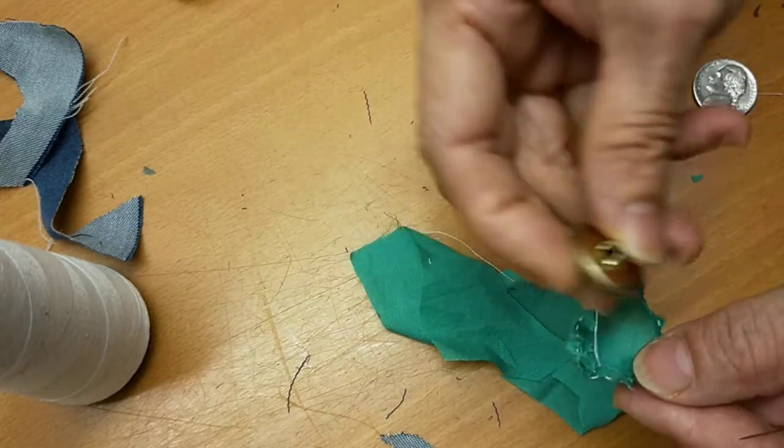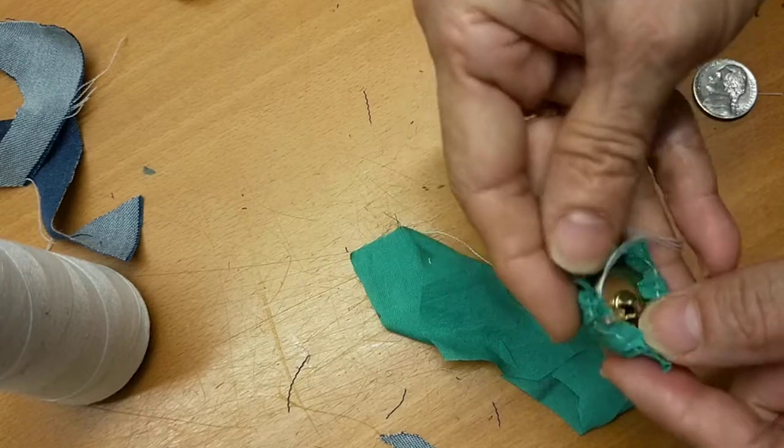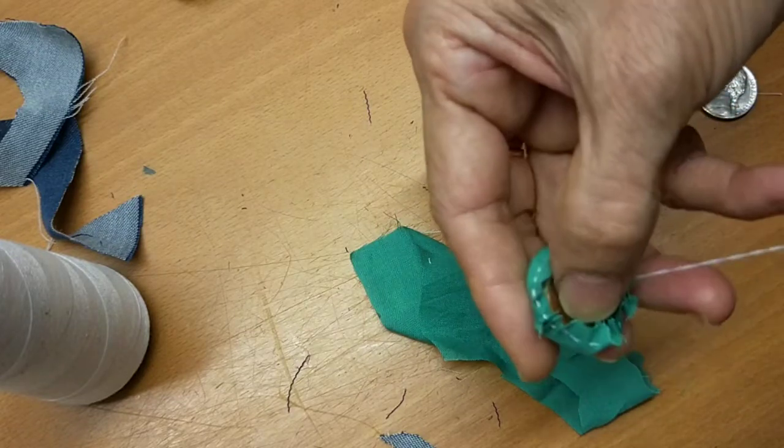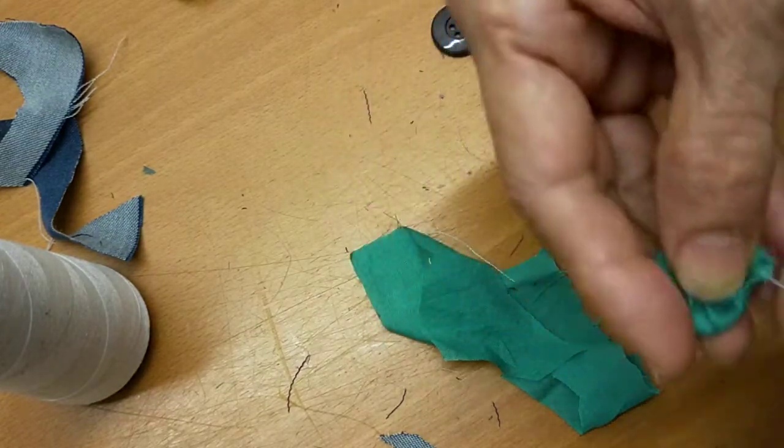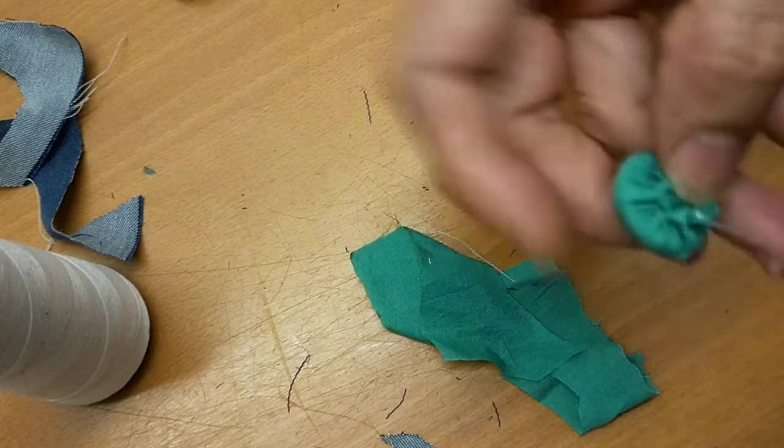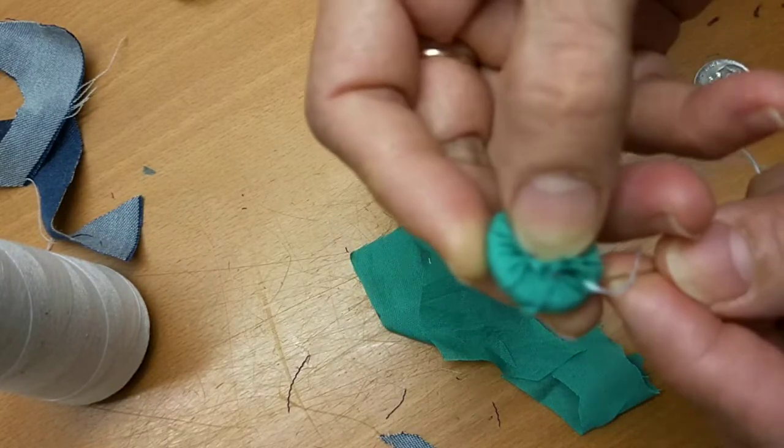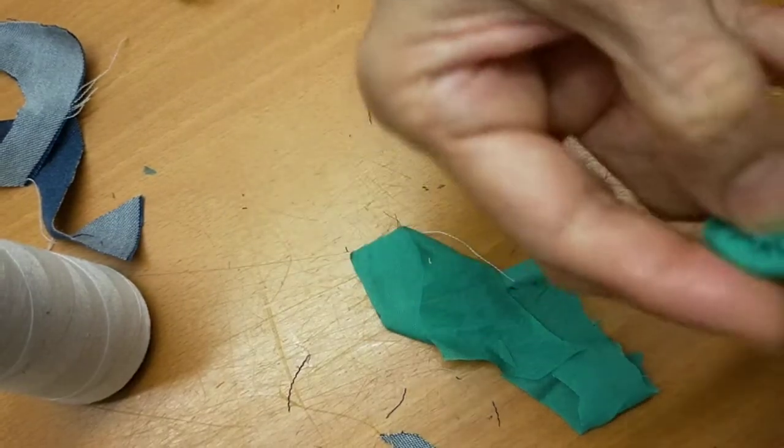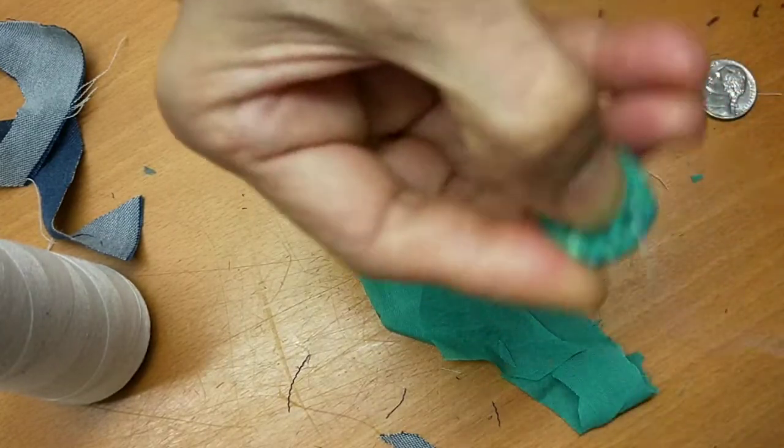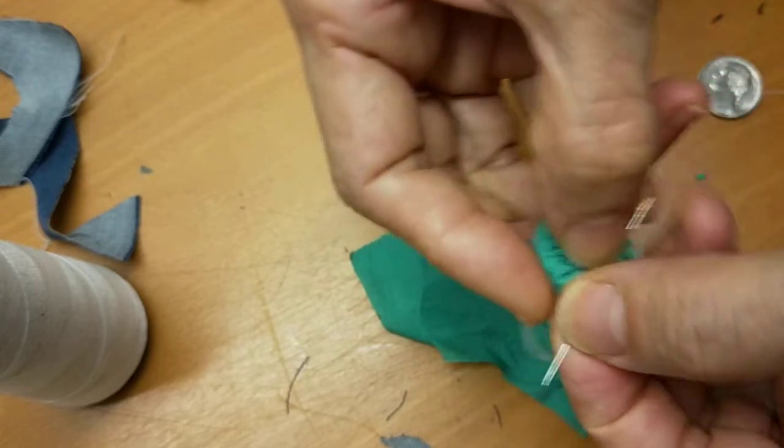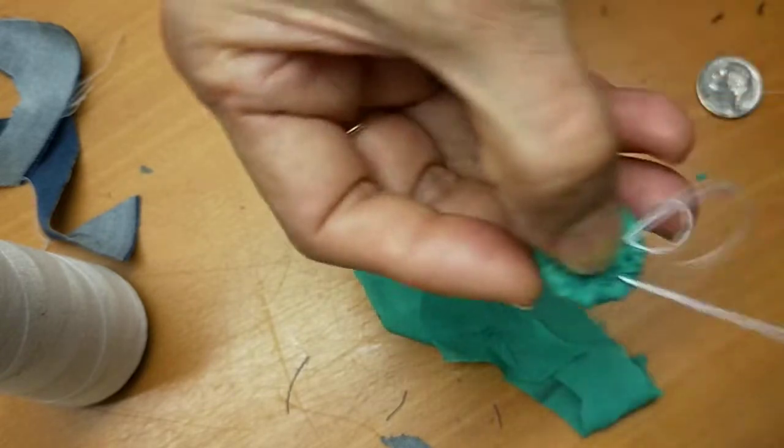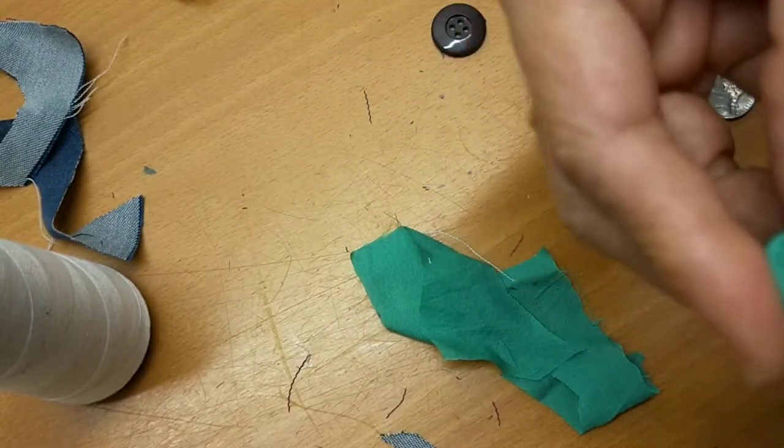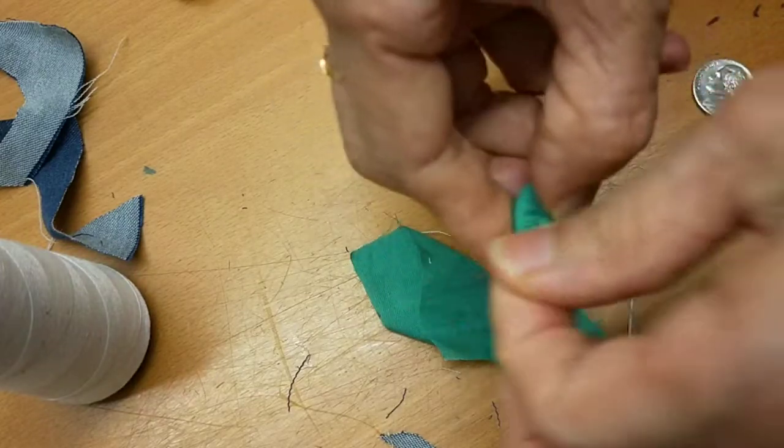Now you can put the button in, make sure it's at the middle, and then you hold it and then gather around. And then this time you do the same with the other one, gather one more time.